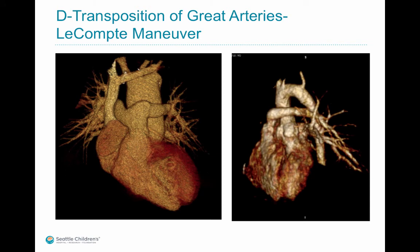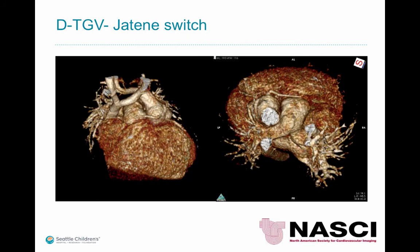For D-transposition of great arteries, although atrial level baffles were discussed, currently the arterial switch procedure is more commonly performed, in which the trunks of the aorta and pulmonary artery are divided and exchanged for each other. This includes the Lecomte maneuver in which the pulmonary artery is placed anterior to the aorta; the branch pulmonary arteries are saddled on both sides, sometimes leading to branch PA stenosis. The coronary arteries are also re-implanted during this procedure.